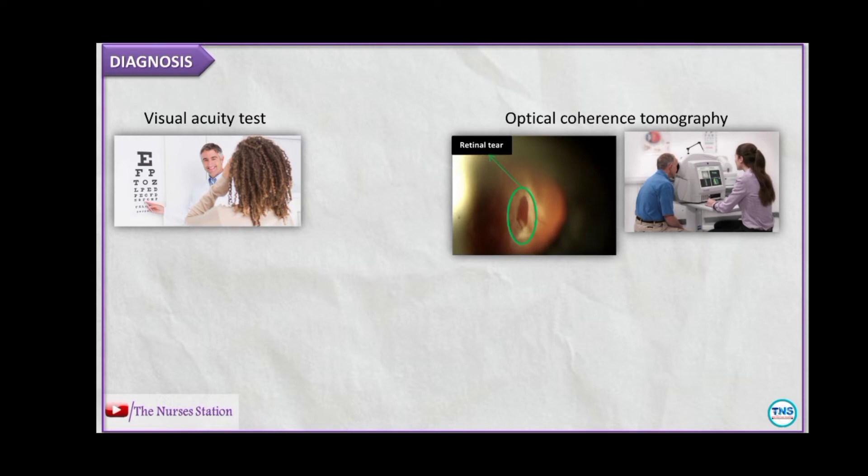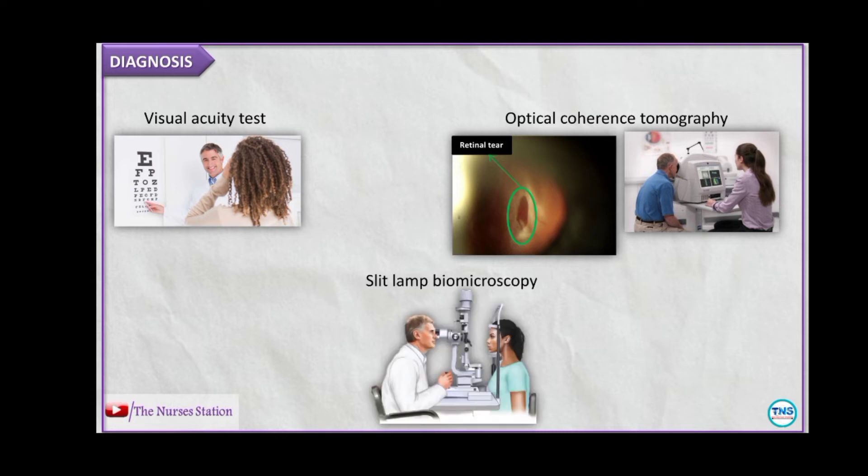The diagnosis of retinal detachment involves visual acuity tests to determine the visual acuity of the patient, optical coherence tomography — which allows visualization of microscopic changes in the retina including small amounts of exudate underneath the retina — and slit lamp biomicroscopy, a microscope with a bright light used during an eye exam that gives a closer look at different structures at the front and inside of the eye.